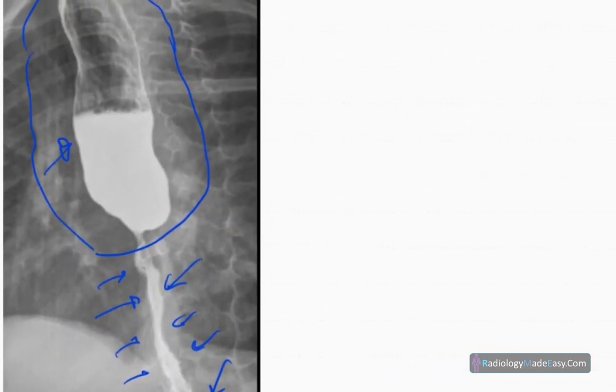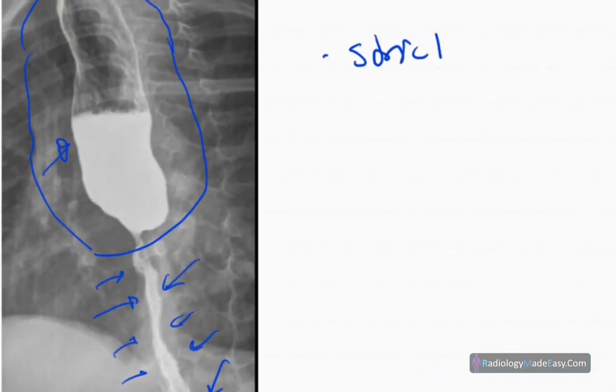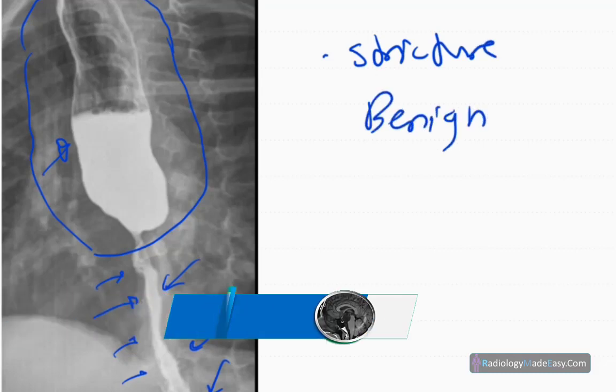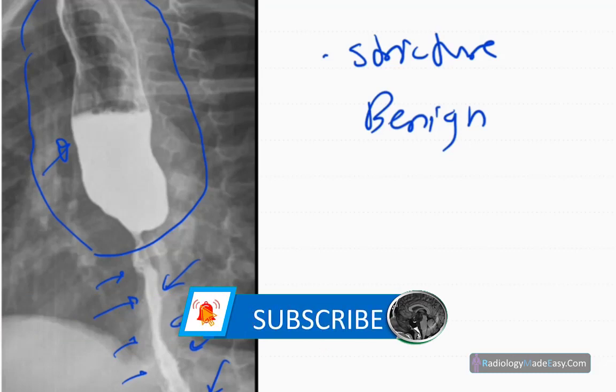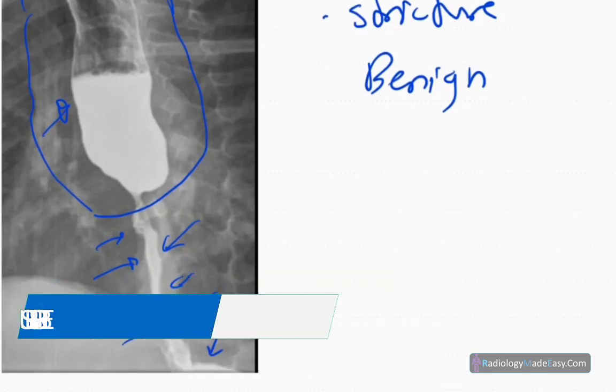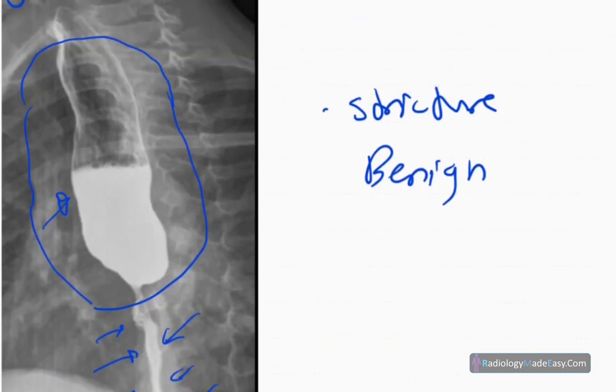And there's a stricture, so it's a benign stricture because it has a smooth outline. Then you have to see the complications like contrast leakage to suggest perforation and fistula tracks, so those are not there.